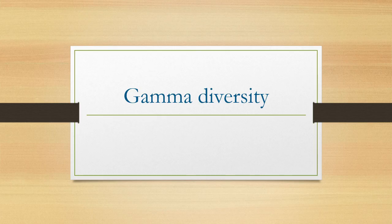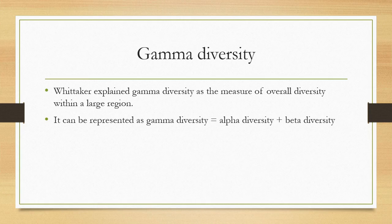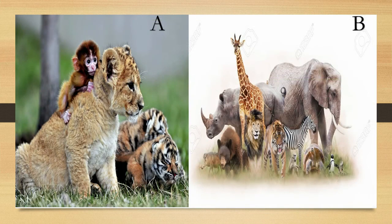So what is gamma diversity? Gamma diversity is the measure of the overall diversity within a large region. It can be represented as: gamma diversity equals alpha plus beta. That is gamma diversity.